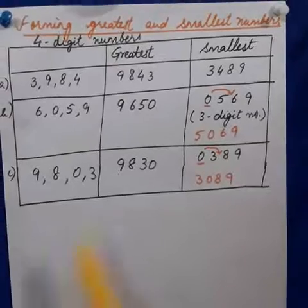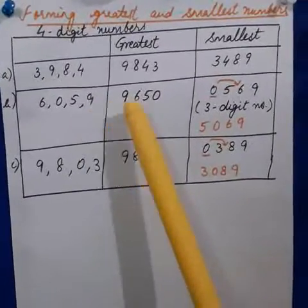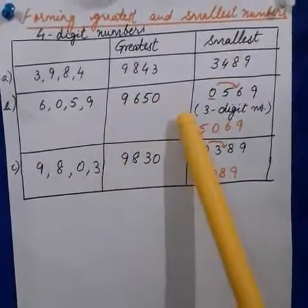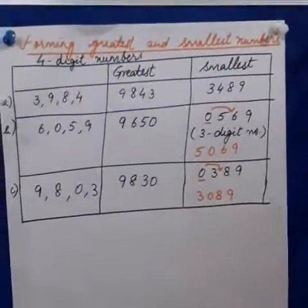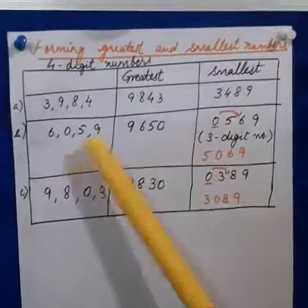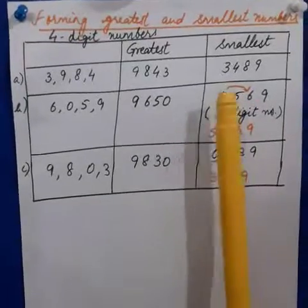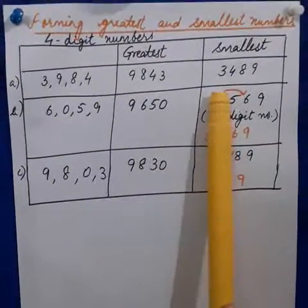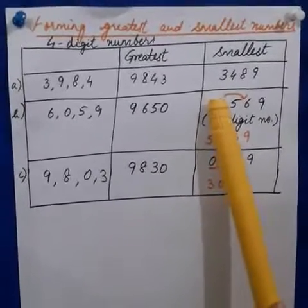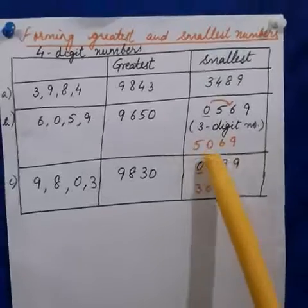Let us move to the second example which includes 0. The digits are 6, 0, 5, 9. For the greatest number: 9 is greatest, then 6, then 5, then 0. So the greatest number will be 9650. Now for the smallest number, the smallest digit is 0, then 5, then 6, then 9 — giving 0569. But as you know, 0 at the front has no value, so the number becomes 569, which is only a 3-digit number. But we need a 4-digit number. So we shift the 0 from the 1000's place to the 100's place, making the number 5069.